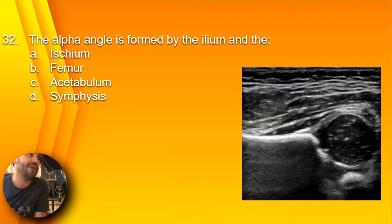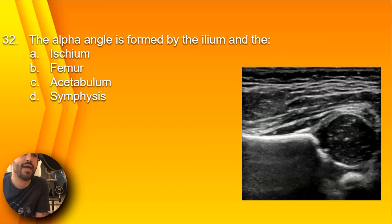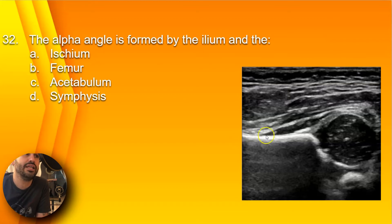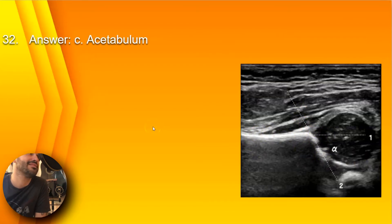Question 32: The alpha angle is formed by the ilium and — A, ischium; B, femur; C, acetabulum; or D, symphysis? Here you have your ilium, and the alpha angle would be between the ilium and C, the acetabulum. That is the alpha angle.